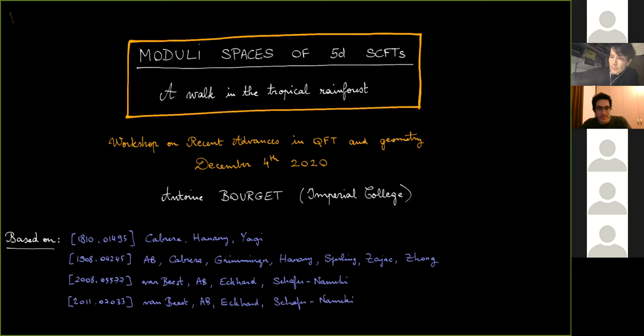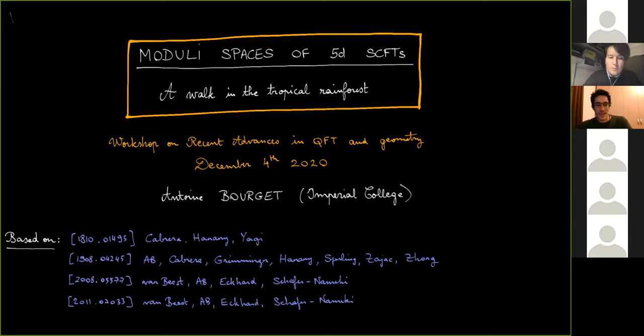The Imperial team authors include Santiago Cabrera, Julius Grimminger, Amihai Hanani, Marcus Perling, Anton Zajax, and Zheng Ha Chong. And then two papers with the Oxford team: Marike van Vist, Julius Eckart, and Sakura. The goal of this talk will be to discuss the moduli space of 5D SCFTs, starting with a brief introduction and then describing recent progress.